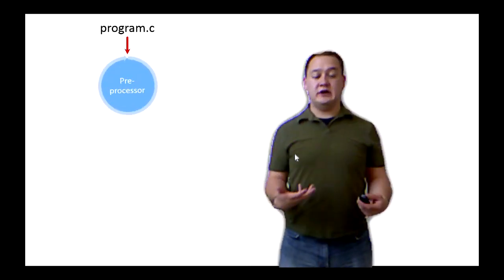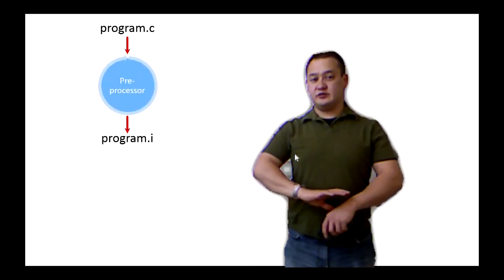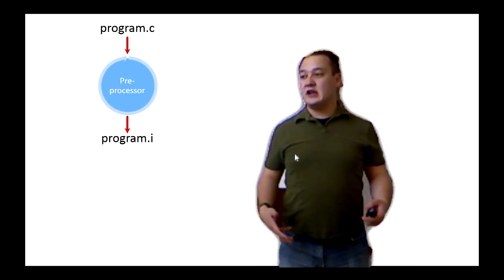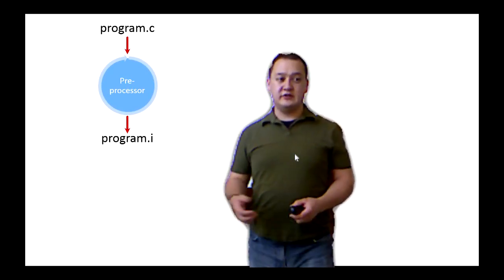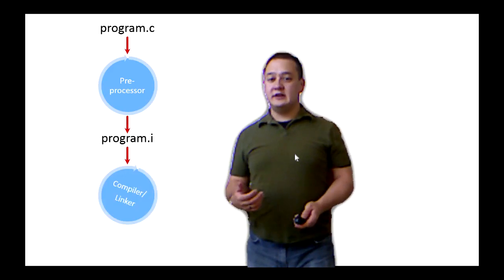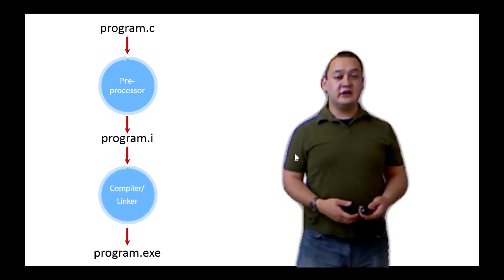And when you want to create your executable, first you send it through a preprocessor. And this preprocessor is going to strip away parts of the code and make it easier so you can actually compile. And then it's going to send that through the compiler linker, which will create your executable.